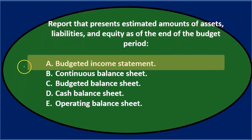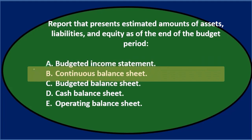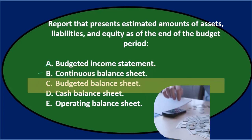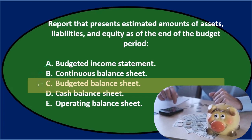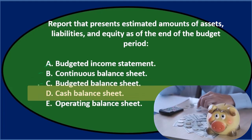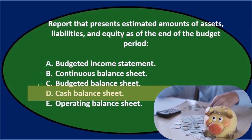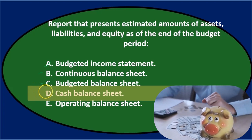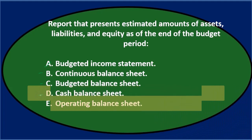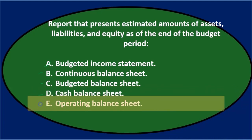A says budgeted income statement — that's not going to be it because it's not revenue and expenses. B says continuous balance sheet, which has the keyword 'balance sheet,' so I'll keep that for now. C says budgeted balance sheet — that's almost too plain to be correct, but it seems pretty good. D says cash balance sheet. Notice they're using the key term 'balance sheet' in all of these. That eliminates A, the income statement. E says operating balance sheet.